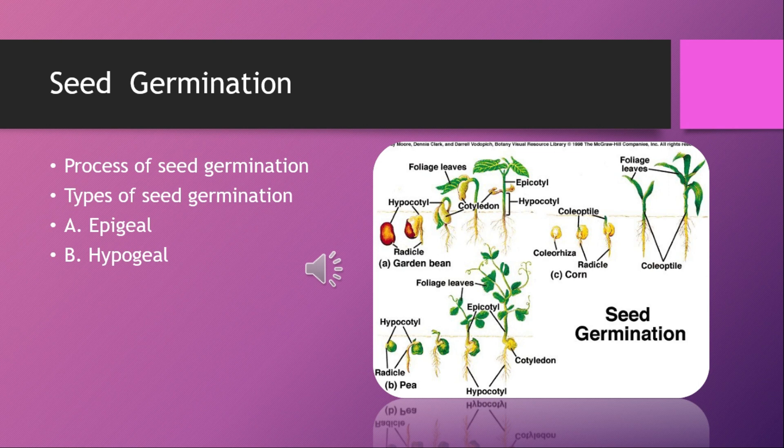There are two types of seed germination: epigeal and hypogeal. In epigeal germination, the cotyledons come out of the soil, become green, and form the first leaves of the seedling. They synthesize food for a short while and then shrivel off. In hypogeal germination, the cotyledons remain under the soil and do not form leaves; the first leaves erupt from the plumule itself.